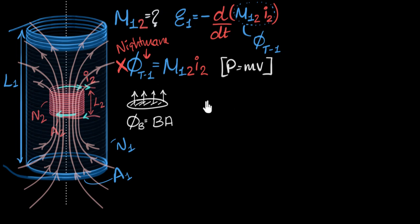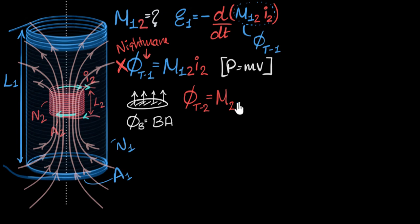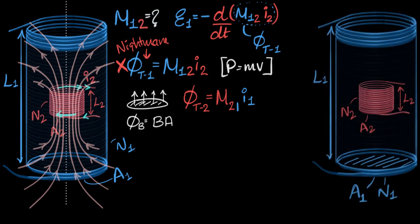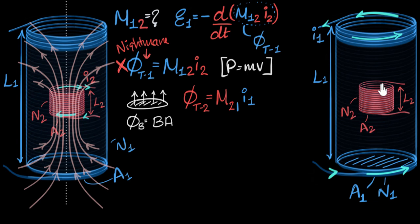Can you write a new equation for calculating flux in the secondary due to the current in the primary, in terms of mutual inductance? The new equation will be: total flux in the secondary equals mutual inductance M21 (of the tiny solenoid with respect to the large solenoid) multiplied by the current in the larger solenoid I1. Now we pass current through the larger solenoid and calculate what the flux through the smaller solenoid is going to be.